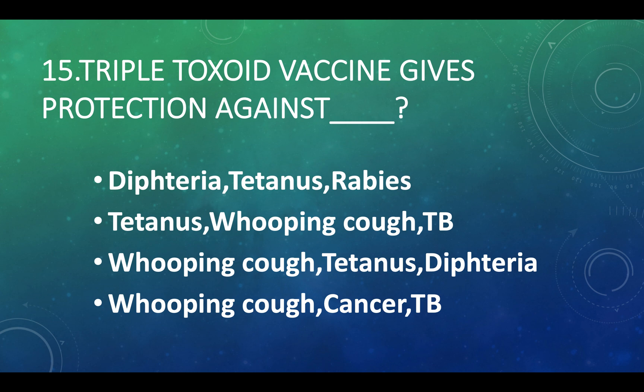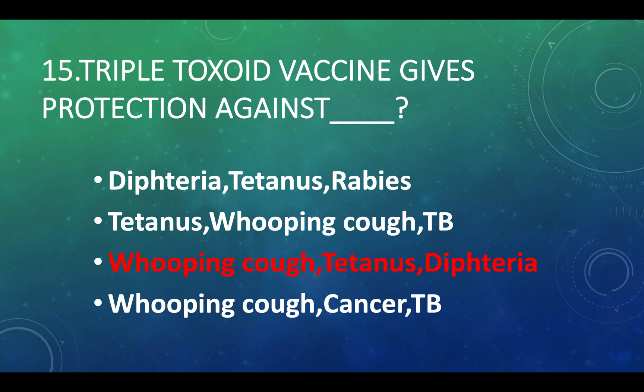Triple toxoid vaccine gives protection against: Option A — diphtheria, tetanus, and rabies; Option B — tetanus, whooping cough, and tuberculosis; Option C — whooping cough, tetanus, and diphtheria; Option D — whooping cough, cancer, and tuberculosis. Answer: Option C, whooping cough, tetanus, and diphtheria.